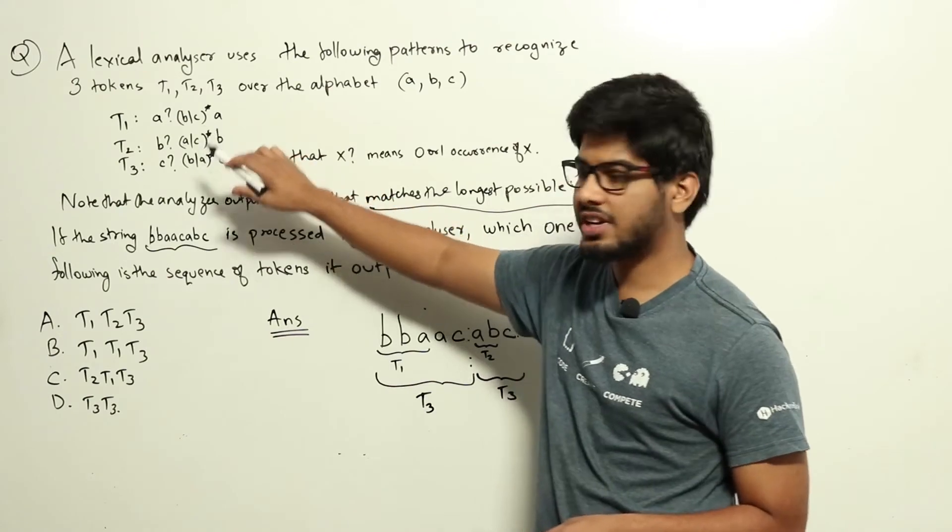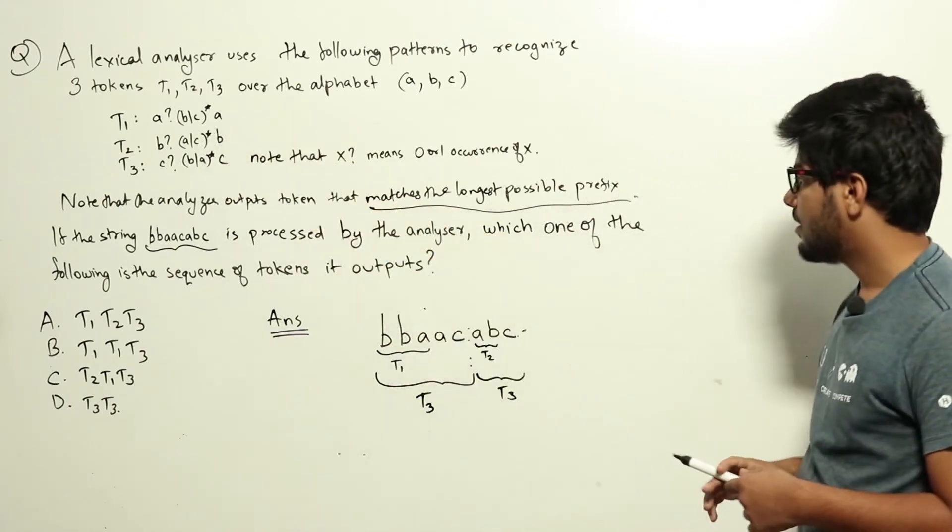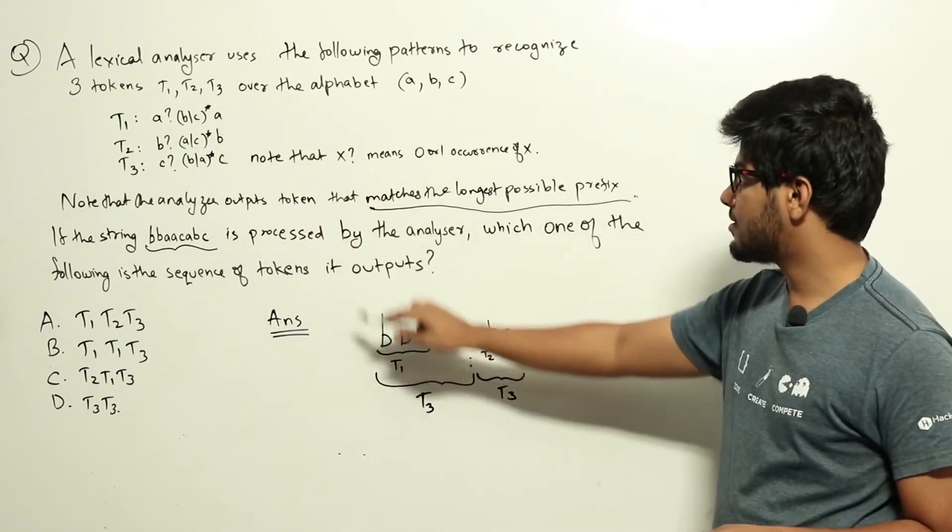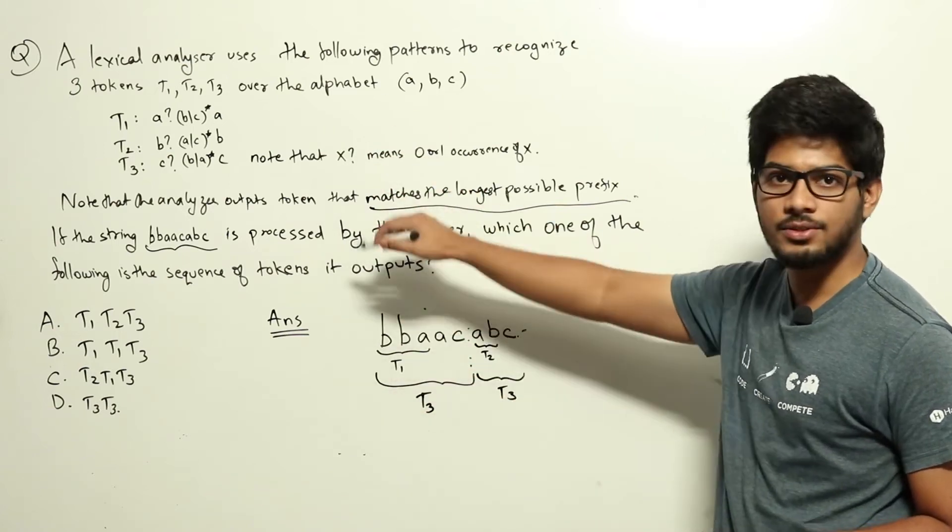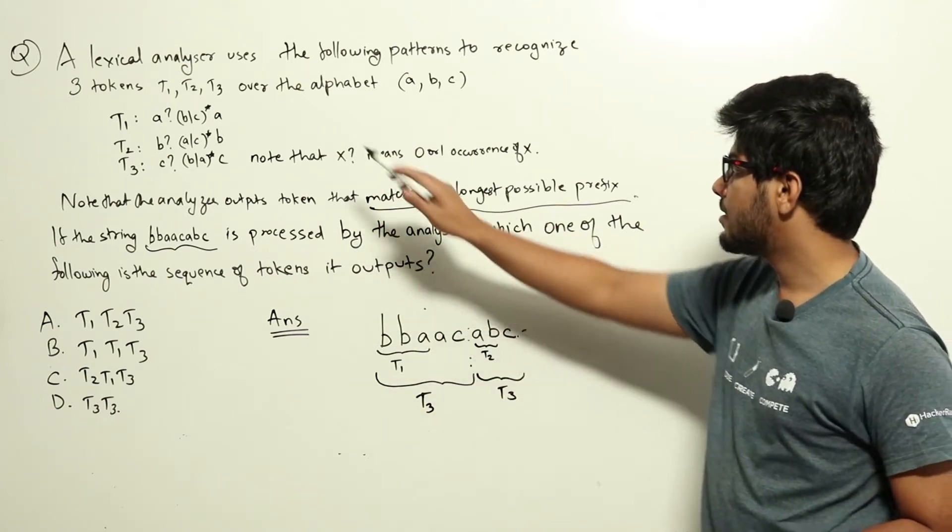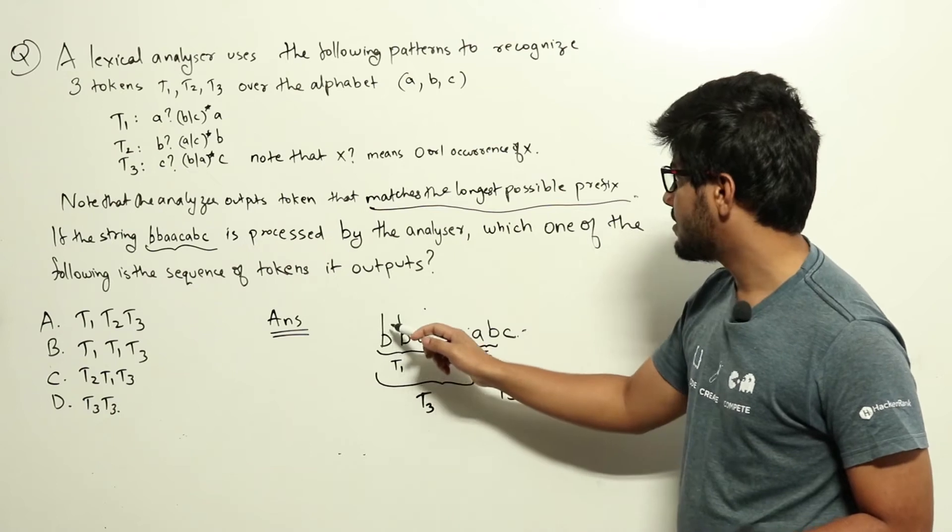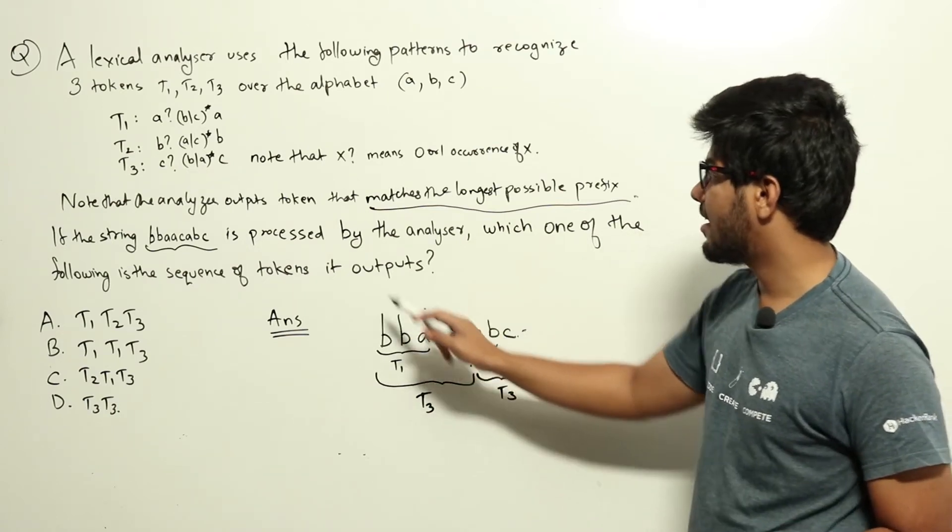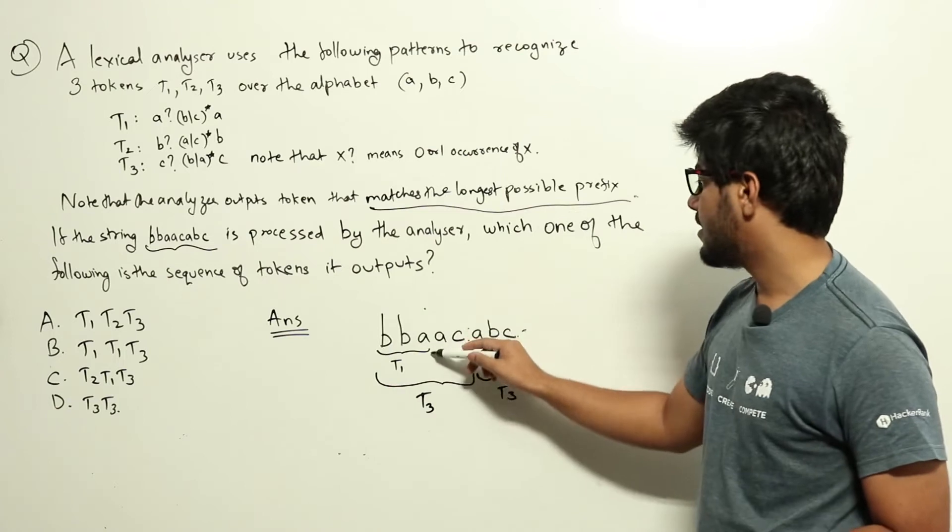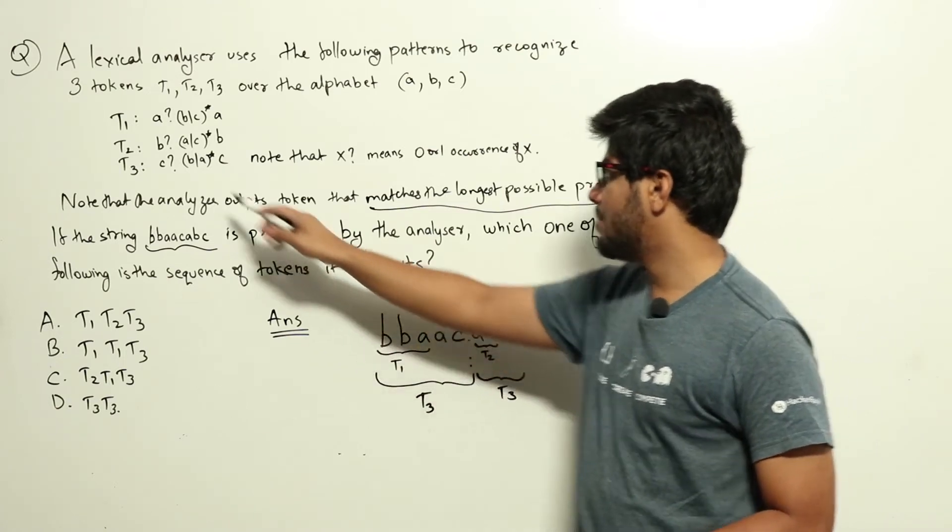Now the first one is not a, so from zero or one occurrence of a we will choose zero occurrence of a, then b or c star b b, so we can match up to here, and then ending with a a, so bba will match token T1.